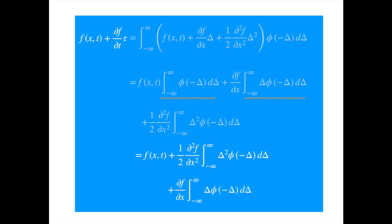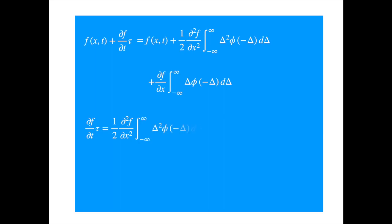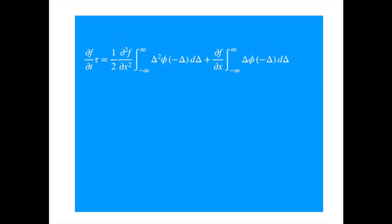Now the f on both sides cancel, and we can shift tau to the right hand side. Now this minus delta is a bit annoying, so let's get rid of it by substituting minus delta for delta, essentially flipping the signs of delta everywhere.